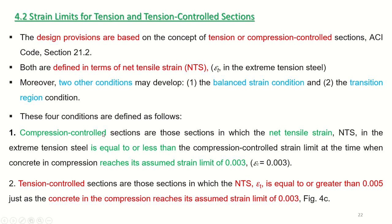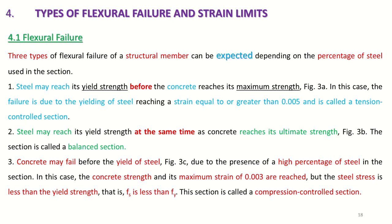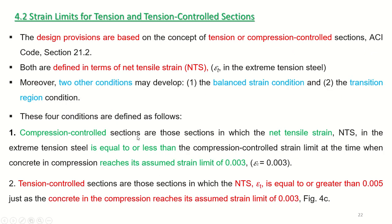First, compression control: these are sections in which the net tensile strain in the extreme tension steel is equal to or less than the compression control strain limit at the time when concrete in compression reaches its assumed strain limit of 0.003. In other words, concrete reaches 0.003 before steel reaches the yielding strain. This is compression control.